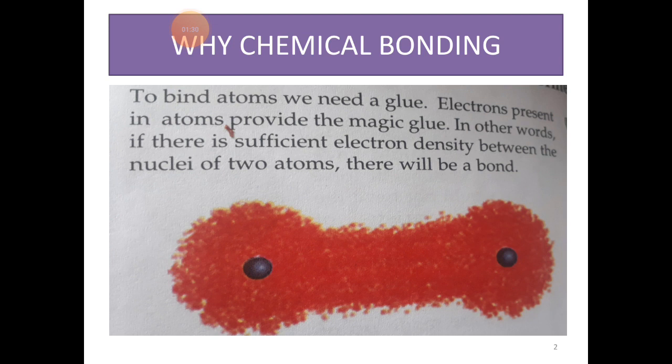Why chemical bonding? The answer to this question lies in the world around us. It is instructive to imagine what the world would have looked like without chemical bonds. Without chemical bonds, the world would have only free atoms or ions. We would not have the amazing variety of substances that we see around us. There would have been no water, no food and there would be no life.